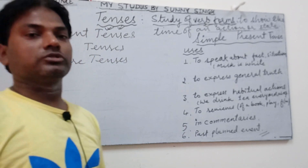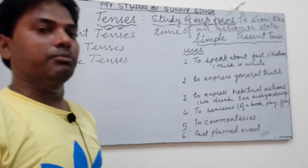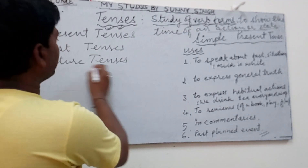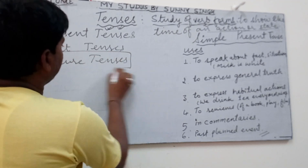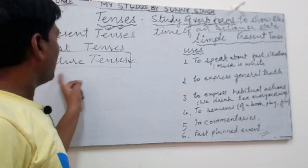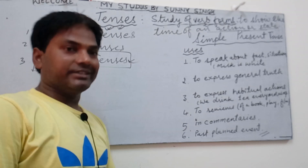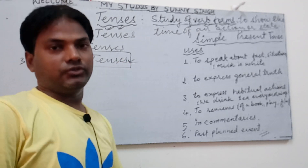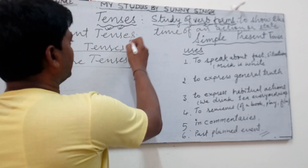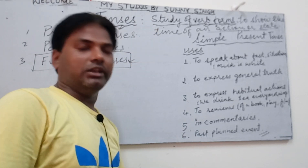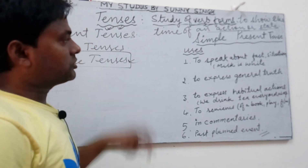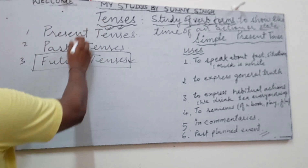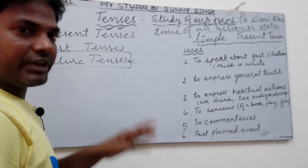I must tell you that in some books — traditional books of English grammar — it says that there are only two types of tenses. Modern grammar exceeds this and says there is no existence of future tense, so there are only present and past tenses. But as per traditional grammar, I'll describe all three types.